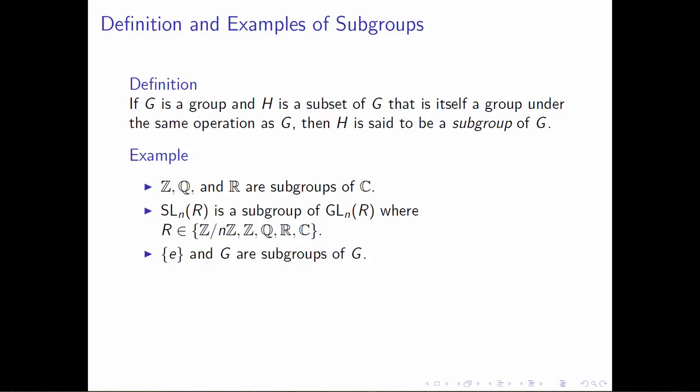If G is any group, we have what I would call the trivial subgroups. First, we could view the group itself as a subgroup — any set is a subset of itself, and since we're using the same operation, a group is a subgroup of itself. Less vacuously, if we take the set containing just the identity element, this will be a subgroup of any group G, because combining the identity with itself just gives the identity. These two are often called the trivial subgroups, and they're important to keep in mind when looking for examples and counterexamples.